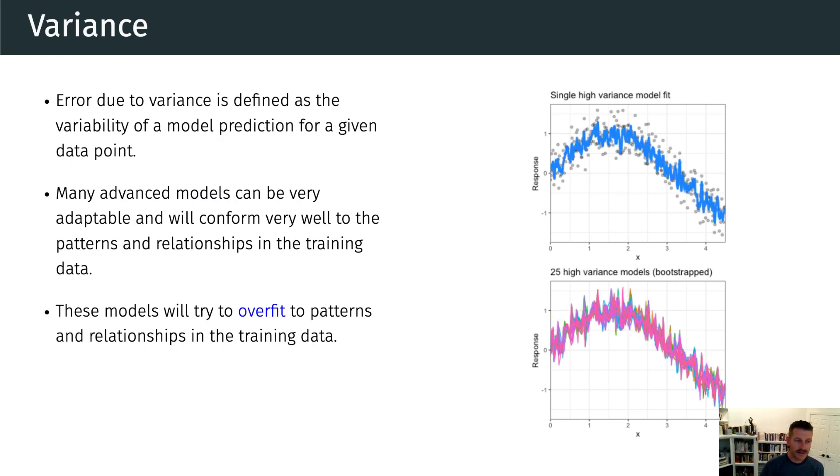All right, so now let's talk about variance. So error due to variance is defined as the variability of a model prediction for a given data point. So many models, think k-nearest neighbor, decision trees, gradient boosting machines, are very adaptable and offer extreme flexibility in the patterns that they can fit.